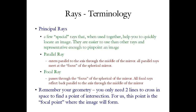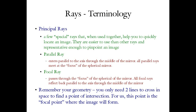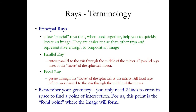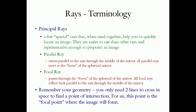If you remember your geometry, you only need two lines crossing to locate a point in space. So you only need two of these principal rays — parallel, focal, or central — to locate a point on the image corresponding to the point on the object where light originated. You're welcome to draw all three, but two are sufficient in principle.